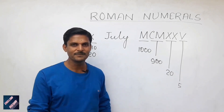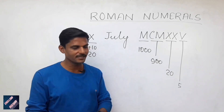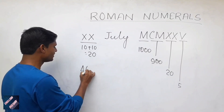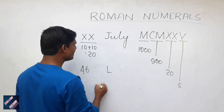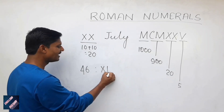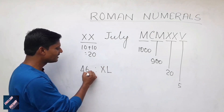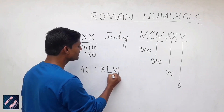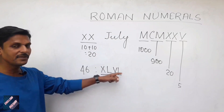Just think about what your date of birth would be. Try to write your date of birth. So now, let's take 46. XL is 40 — L is 50, X before L means 50 minus 10 equals 40. And 6 is VI. So 46 is XLVI.